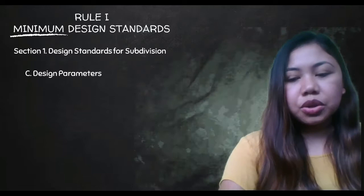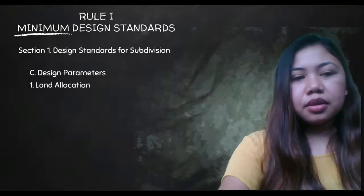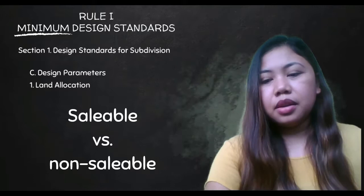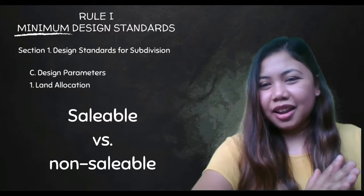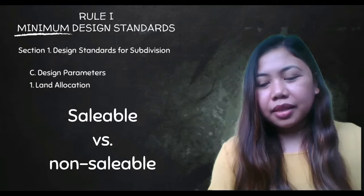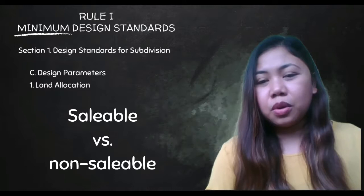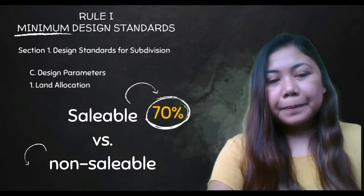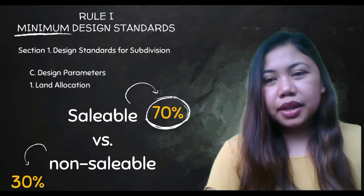Still under Section 1, design parameters — land allocation. In a subdivision there are sellable lots and non-sellable areas. The standard is that 70% of the total area is sellable, and 30% is non-sellable. So 70% of your total owned lot can be developed into sellable lots.